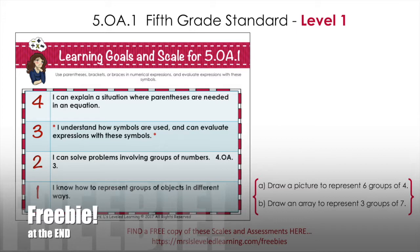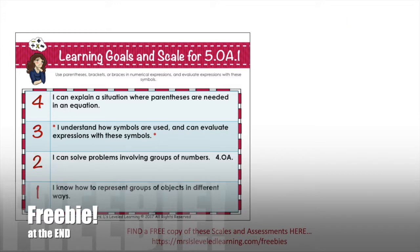At level one, students know how to represent groups of objects in different ways. We're going to start very simple with pictures. I would ask them to draw a picture to represent six groups of four, three groups of seven. If you want to give them a challenge, you could also say four groups of six and seven groups of three. Make sure they can flexibly use groups and understand how they might be different or the same. Very basic — something they would probably have done in second or third grade.